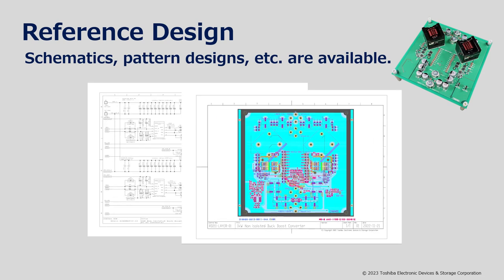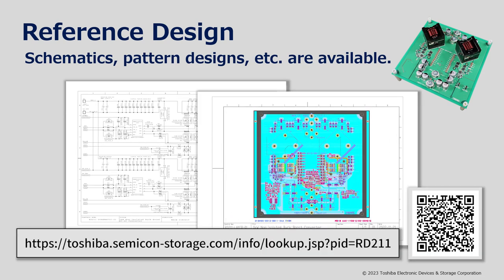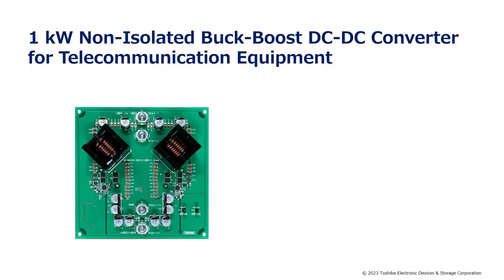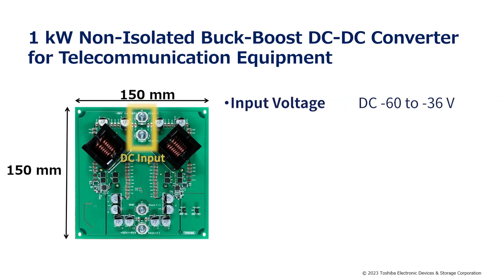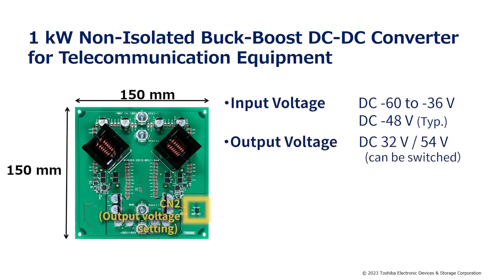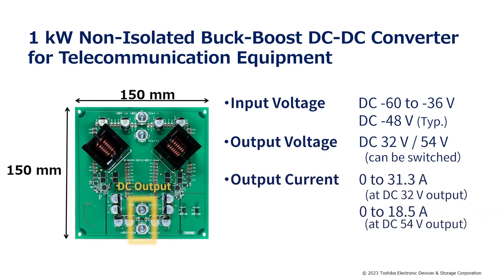This reference design of a one kilowatt non-isolated buck-boost DC-DC converter for telecommunication equipment is implemented on a 150 by 150 millimeter board. Input voltage ranges from minus 60 volts to minus 36 volts, and the typical input voltage is minus 48 volts. The output voltage can be switched between 32 volts or 54 volts, and the rated output power is 1 kilowatt.